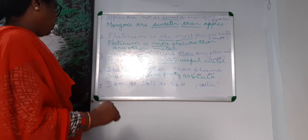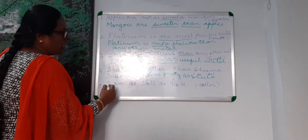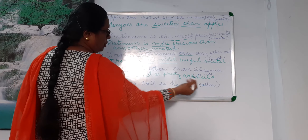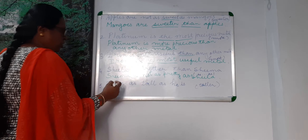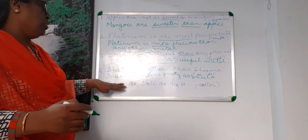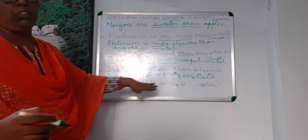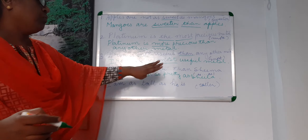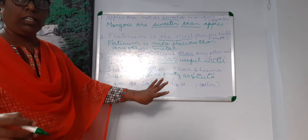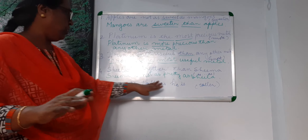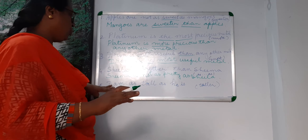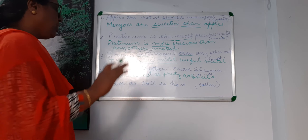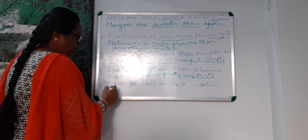Now the next sentence: I am as tall as he is. You are asked to use the comparative form — 'taller.' Both are equally tall, so no one is taller than the other. When comparing with 'taller,' since both are equally tall, you again have to use 'not' to keep the meaning the same.